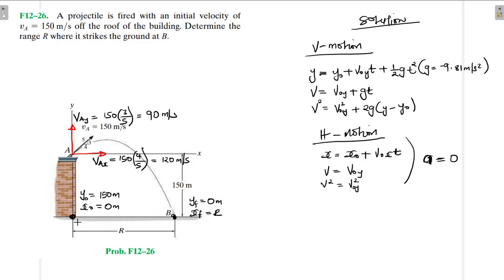We are required to find the range. To find the range we are going to use the horizontal equation. But looking at that equation, we have x_final — which is what we're looking for — x_0 which we have, and v_0x which we have, but we don't have the time. So we need to find the time first.